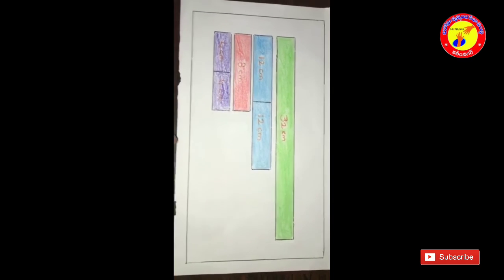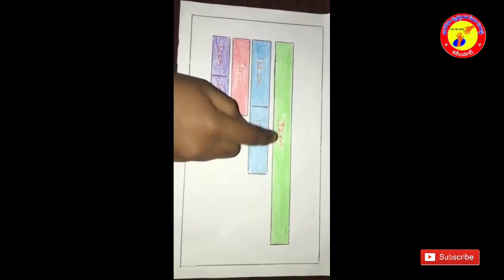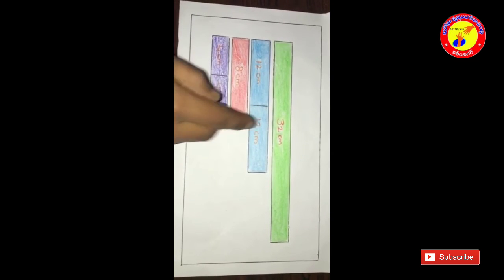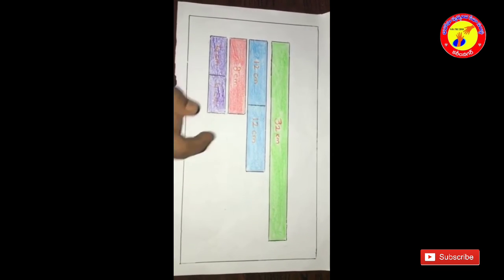Cut out 3 rectangles from chart paper. One rectangle of length 32 cm and two of length 12 cm. Take the same breadth. Color the rectangles with different colors. Same color for same length.